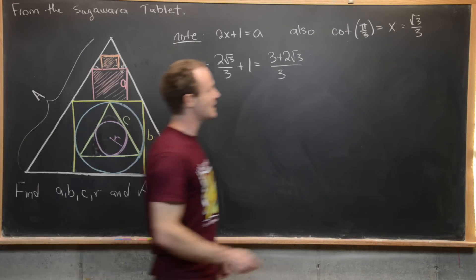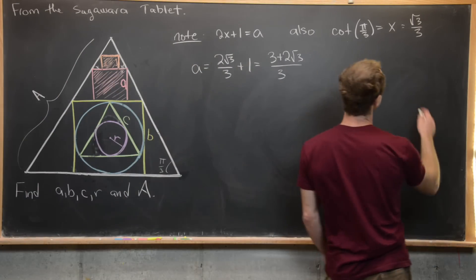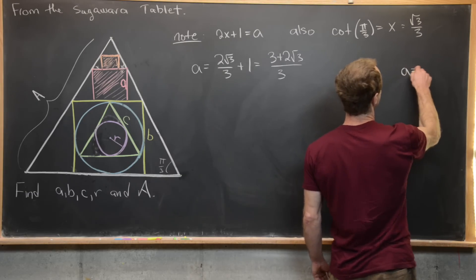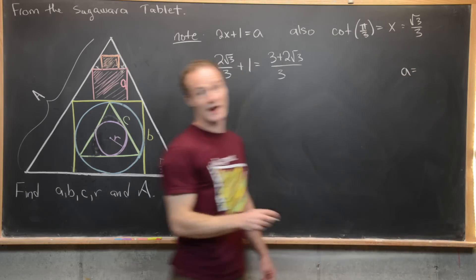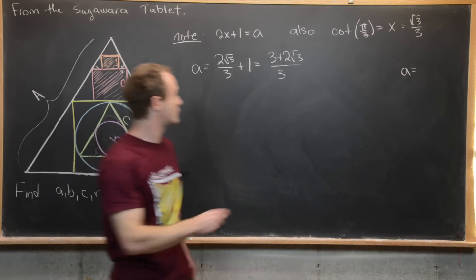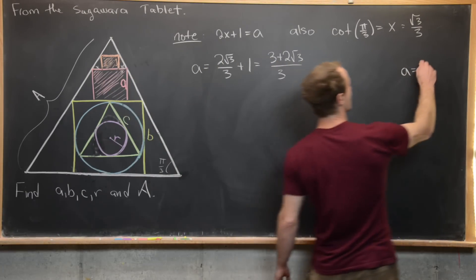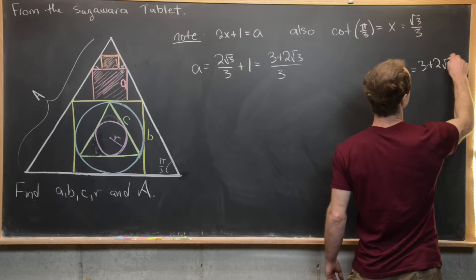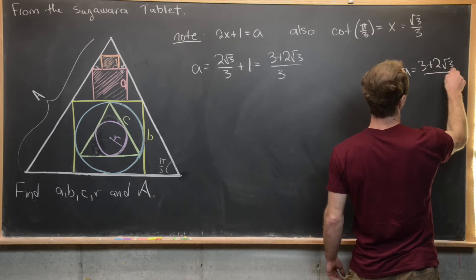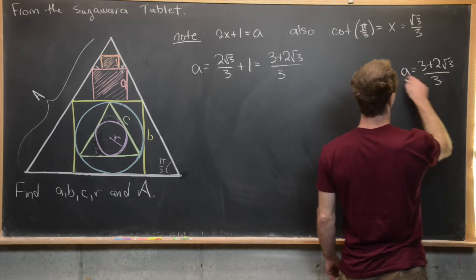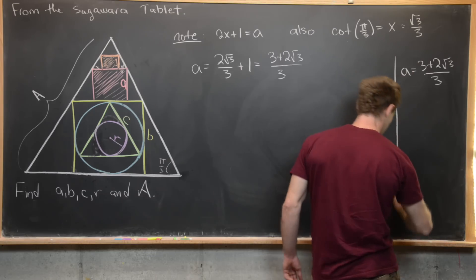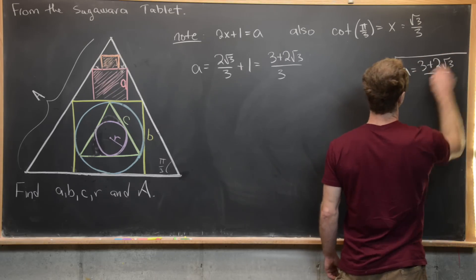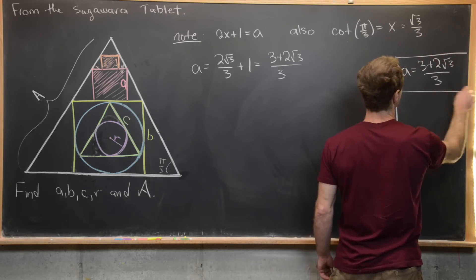That gives us all the information we need to calculate a. We have a equals 2 times root 3 over 3 plus 1, which gives us 3 plus 2 root 3 over 3 with a common denominator. So a equals (3 + 2√3) / 3.